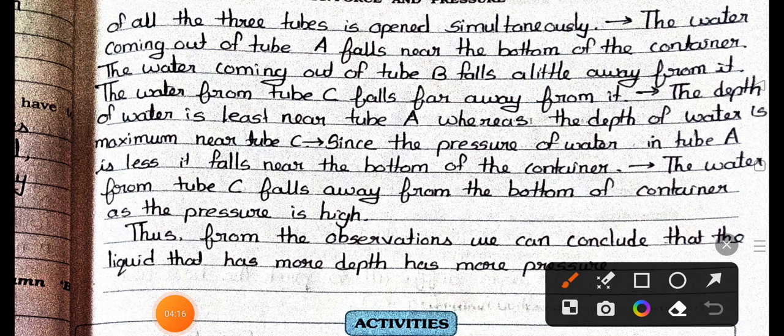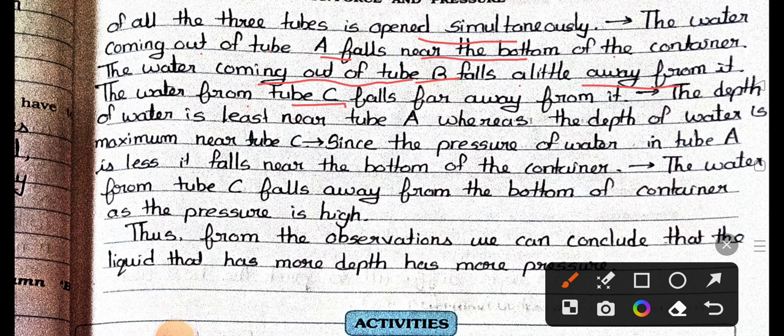of all three tubes is opened simultaneously. The water coming out of tube A falls near the bottom of the container. The water coming out of tube B falls a little way from it. The water from tube C falls far away from it. The depth of water is least near tube A, whereas the depth of water is maximum near tube C.